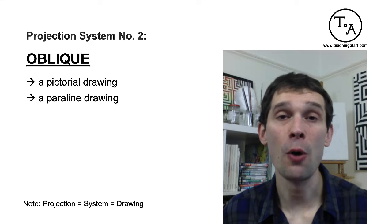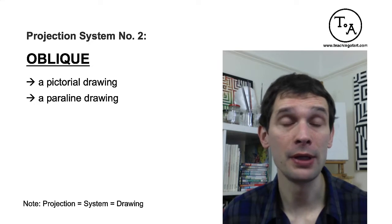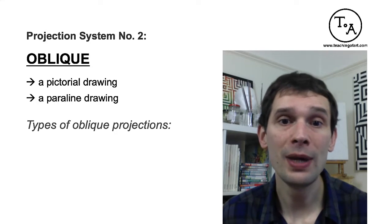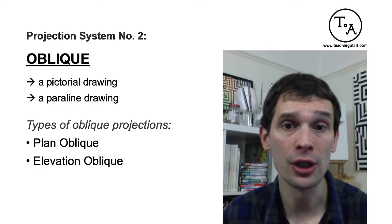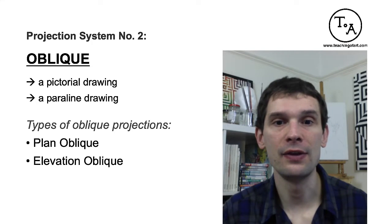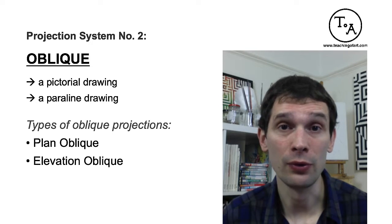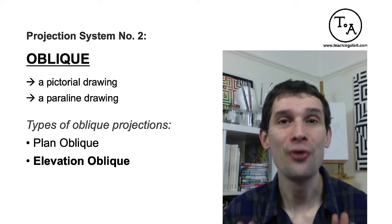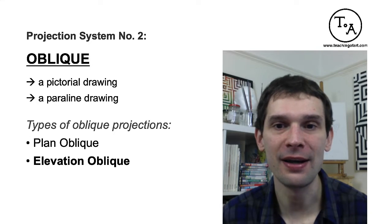Projection system number two is oblique projection. The oblique projection can be considered a pictorial drawing because it captures all three dimensions, and it also belongs to the parallel drawing category because of its characteristics. There are two main types of oblique projection: elevation oblique projection and plan oblique projection. The plan oblique projection is sometimes referred to as military projection because it creates a feeling that you're looking at the object from the top. I want to focus on the elevation oblique projection, which is more practical. It has subcategories with fancy names like cavalier or cabinet projections, but we're not going to worry about those.